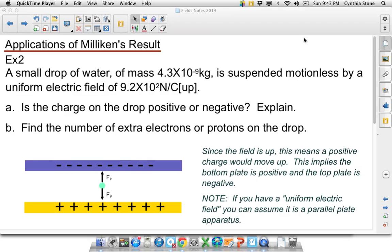Okay, so in this first example, or second example I guess, we're saying we have a small drop of water. We know its mass, and similar to the oil drop, it's held motionless inside a parallel plate apparatus. And it is inside a field of 920 N per Coulomb up, where the negative plate is on the top in this case, and the positive plate is on the bottom.